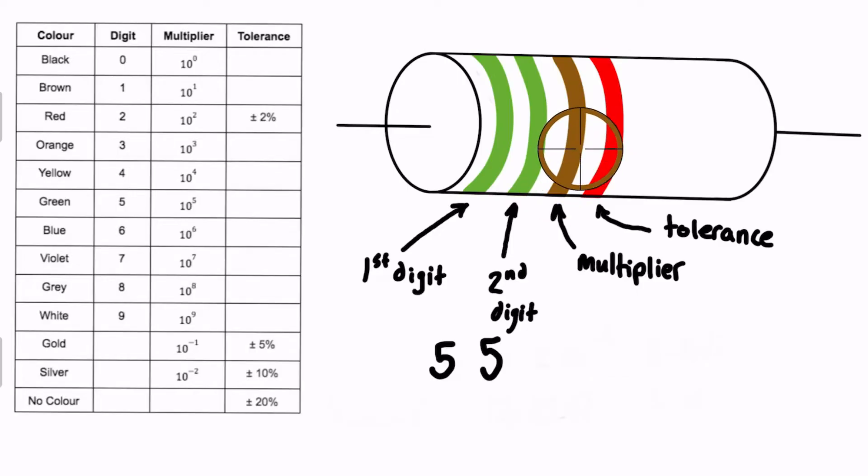And then we'll locate brown for the multiplier, so we'll come down until we find brown, which is right here, multiplier is times 10 to the 1, so we're going to have this times 10 to the power of 1, and then the tolerance red here is going to be plus or minus 2%. All right, so let's just clean this up a little bit, 55 times 10 to the power of 1 is just 55 times 10, so that is 550 ohms plus or minus 2%, so that is the resistance of this resistor based on the color code.